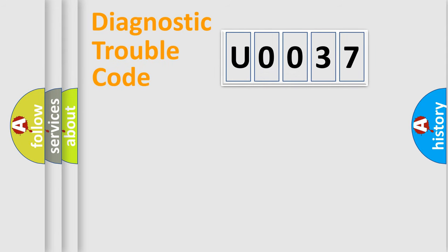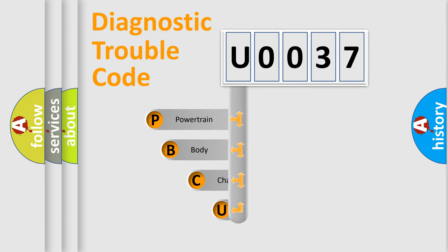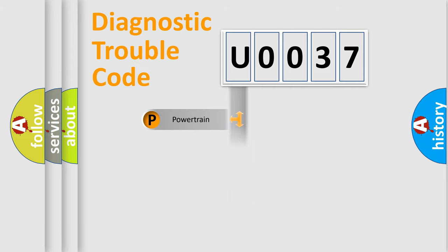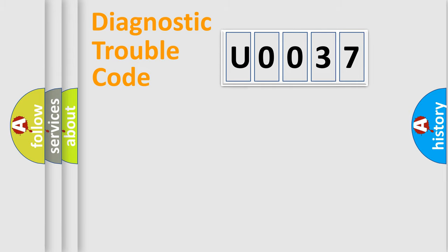Let's do this. First, let's look at the history of diagnostic fault code composition according to the OBD2 protocol, which is unified for all automakers since 2000. We divide the electric system of an automobile into four basic units: Powertrain, Body, Chassis, and Network.